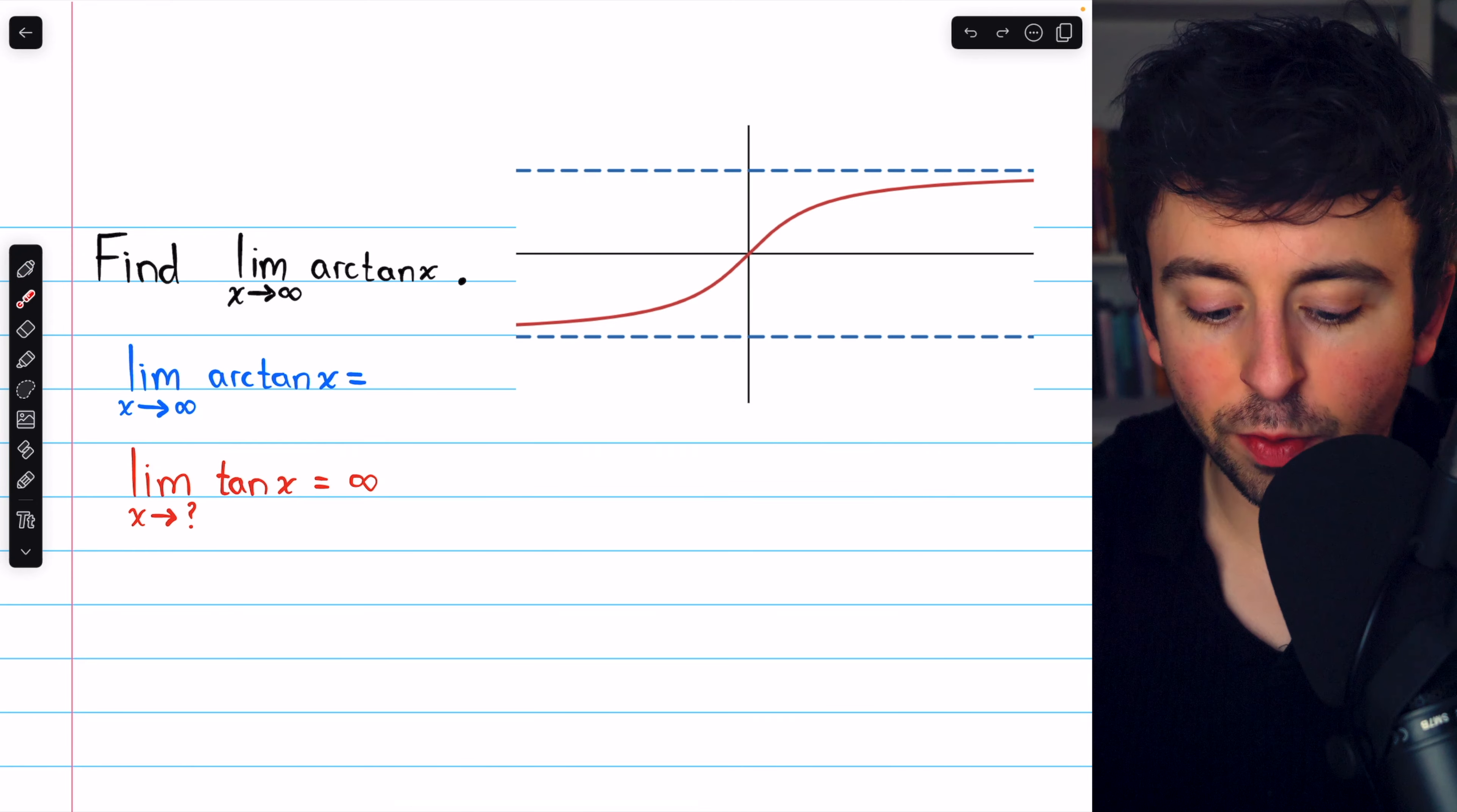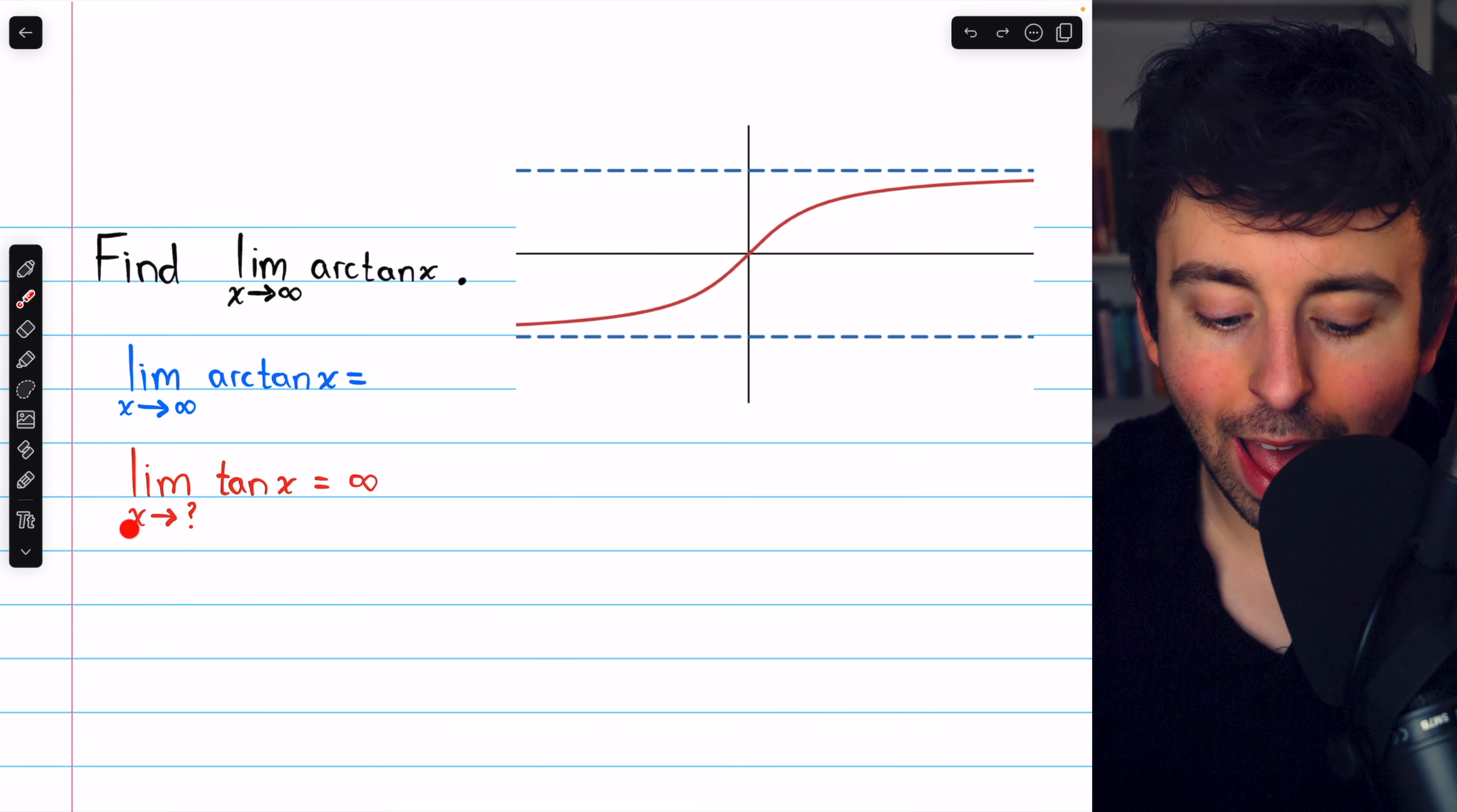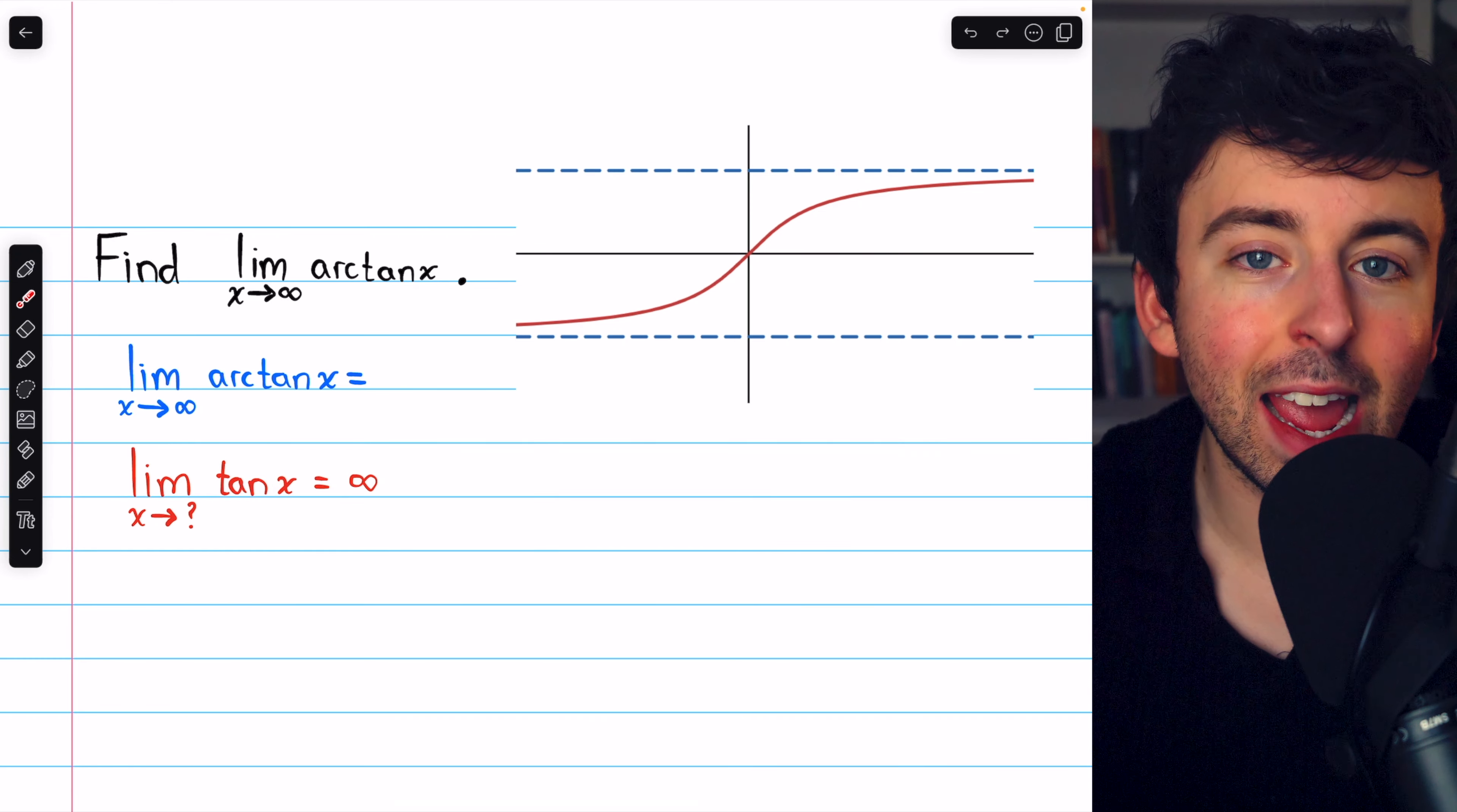Well, by definition, to find the limit of arctan of x as x goes to infinity, we want to think about what x would have to approach for tangent of x to go to infinity, because arctan is the inverse of tangent.